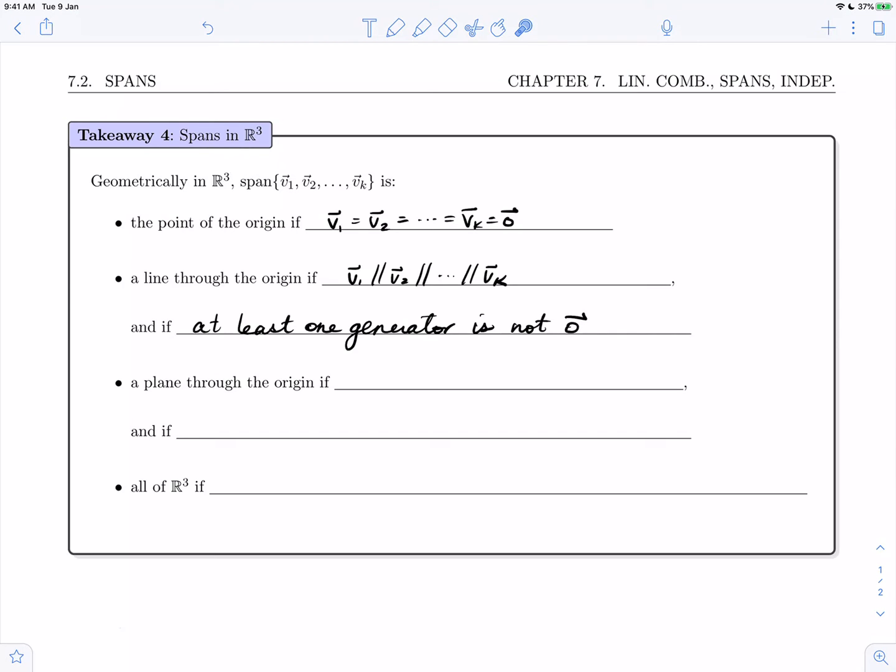The span of a collection of vectors v1 through vk can be a plane through the origin if the generators are coplanar. But that's not quite enough either because parallel vectors are all coplanar, so we need there to be at least one pair of non-parallel generators.